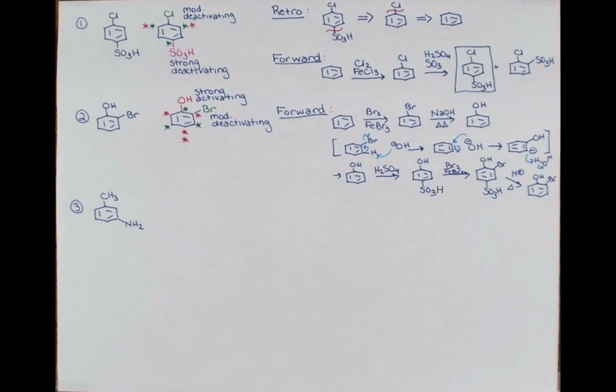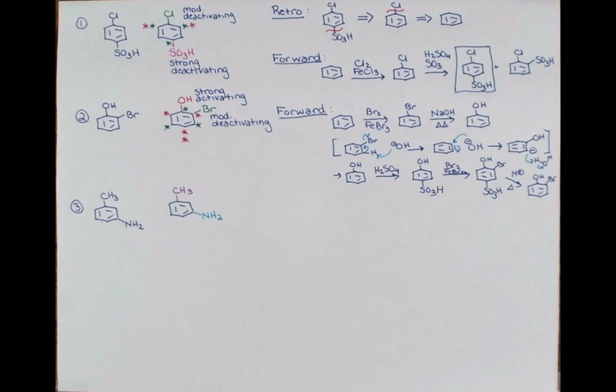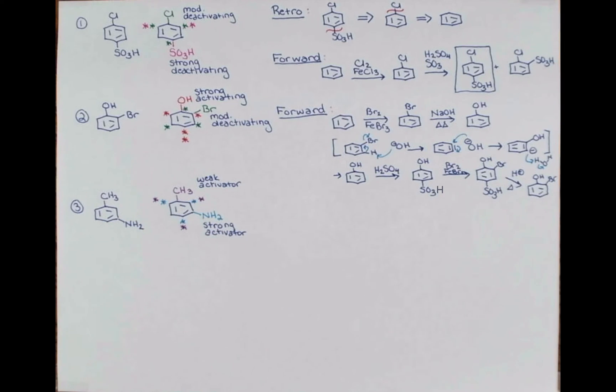Now let's try a little bit more challenging of an example. Here is the molecule we want to make from benzene. Let's evaluate our directing effects. NH2 is a strong activator that directs ortho and para to itself. And the methyl group is a weak activator that directs ortho and para. So you can see the challenge. Neither of these groups are directing where we want. So we have to consider groups that might be able to be converted into these groups that give other directing effects.